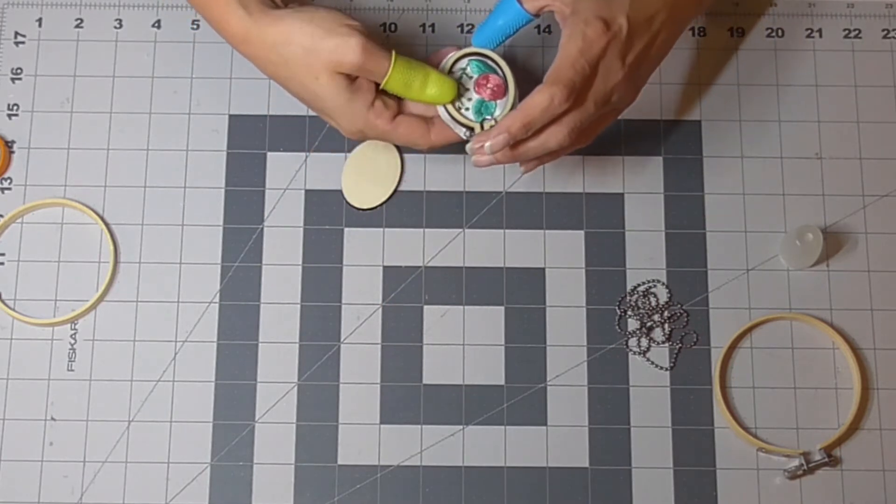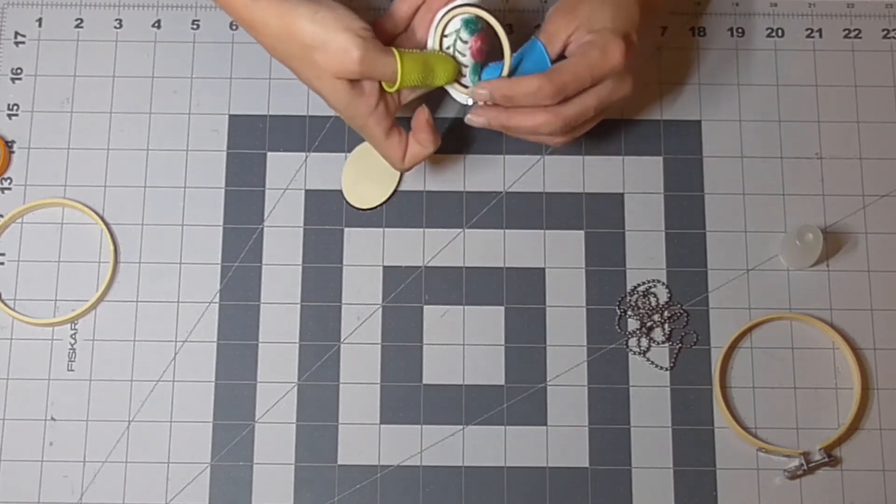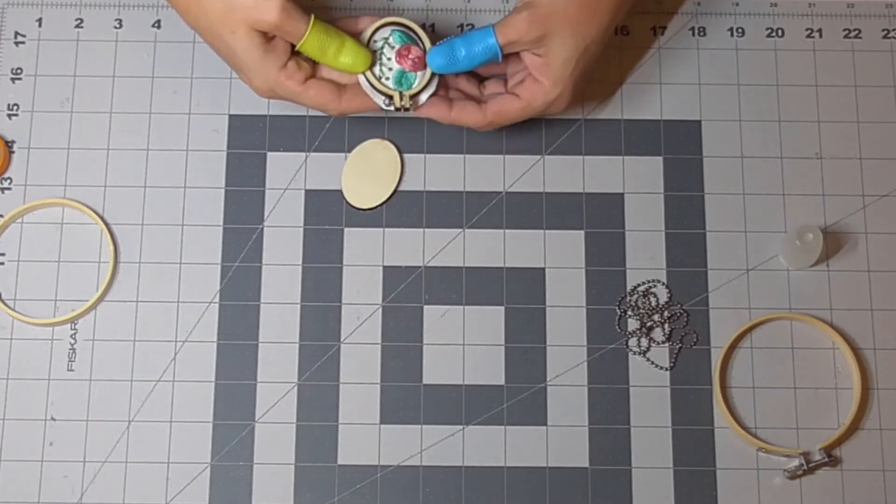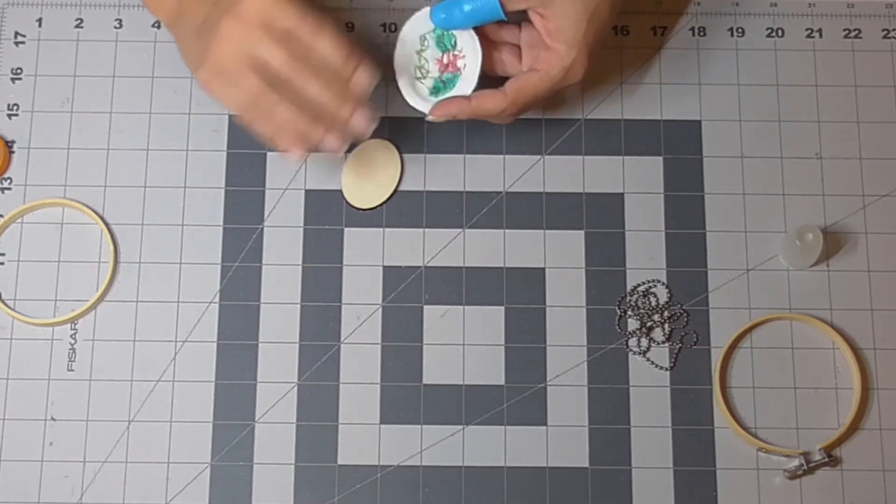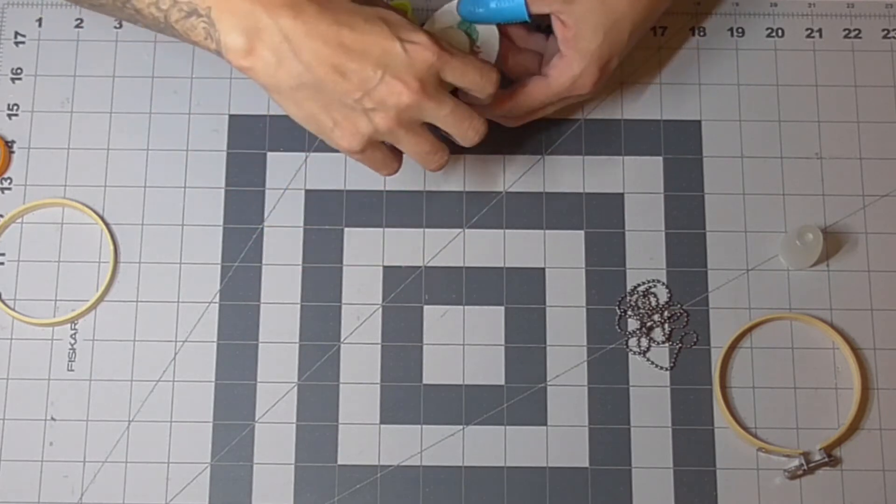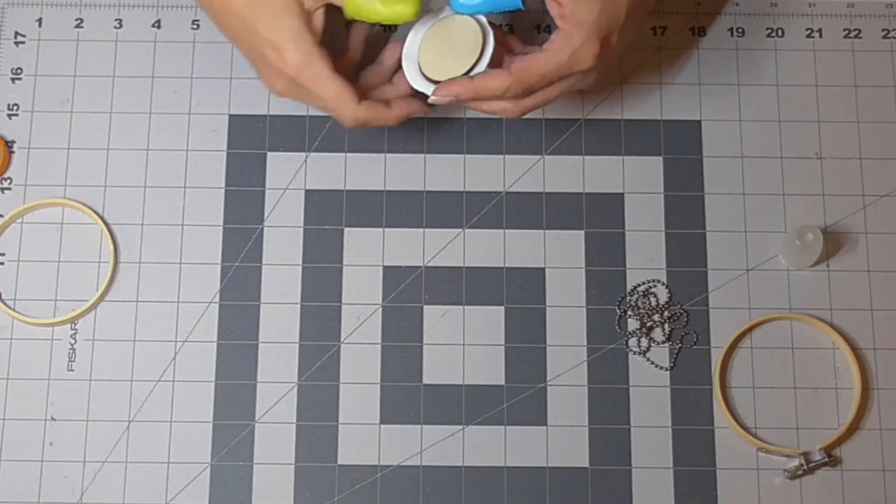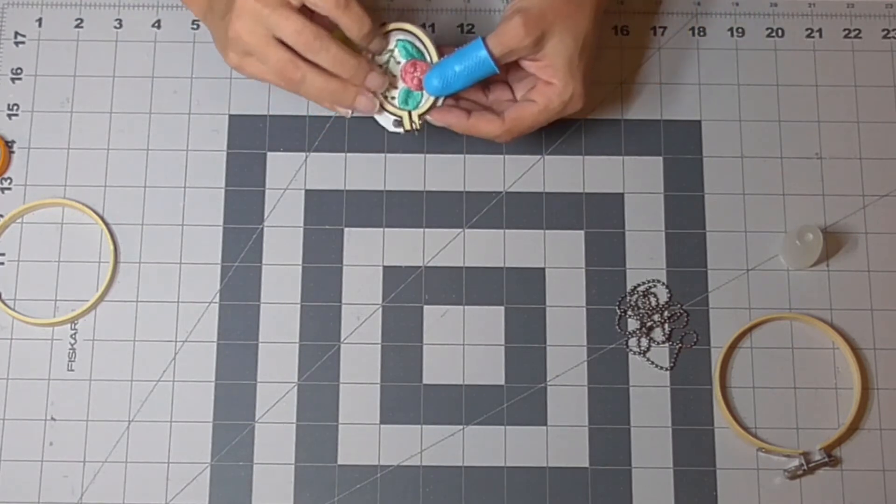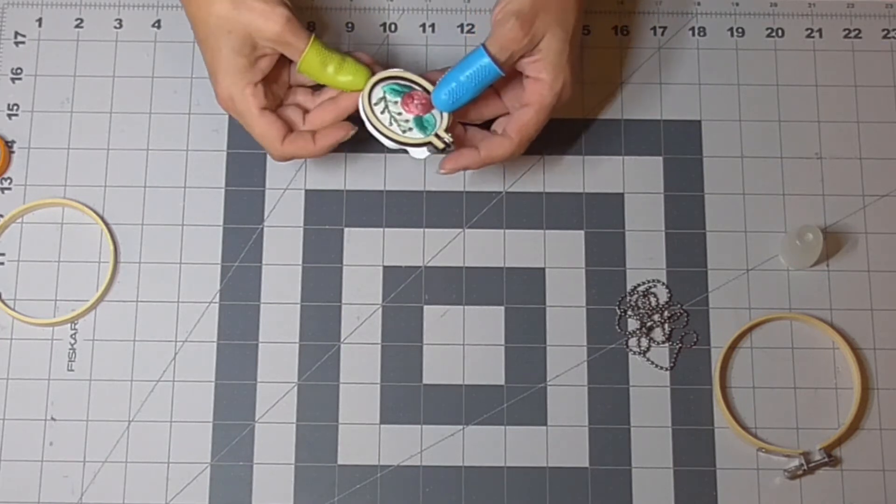All right, so I'm going to re-line that up in there. Make sure your jump ring isn't in the way. Okay, re-line everything up.